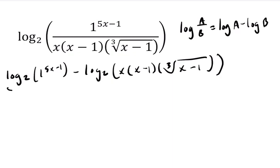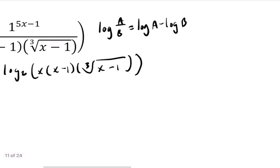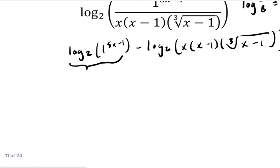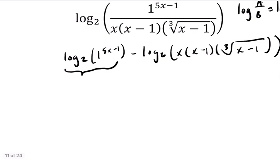Now with this first thing, we can bring this exponent down in the front because of another common law that we use. If you have the log of a to the c, that equals c times the log of a. So let's bring the exponent down. We have 5x minus 1 times the log base 2 of 1.